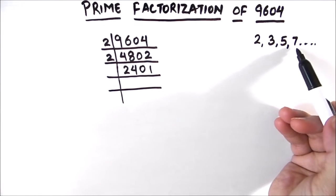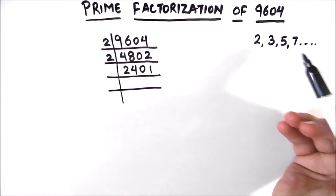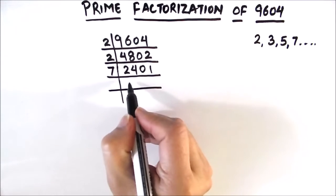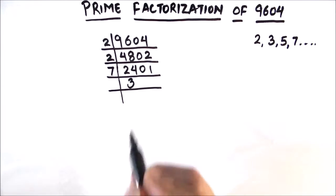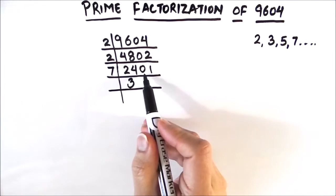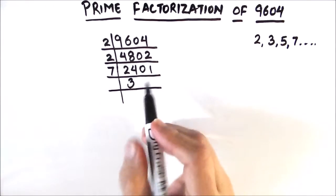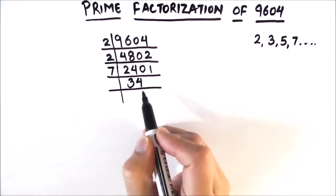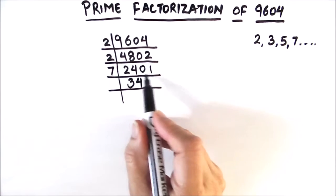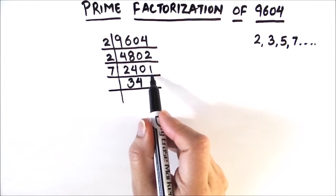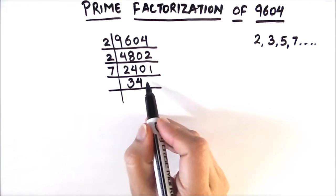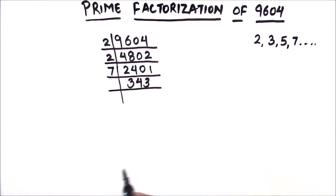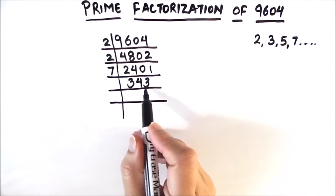So let's try dividing 2401 by 7. 7 times 3 is 21, remainder 3, this becomes 30, 7 times 4 is 28, remainder 2, this becomes 21, and 7 times 3 is 21. So 2401 divided by 7 gives us 343.